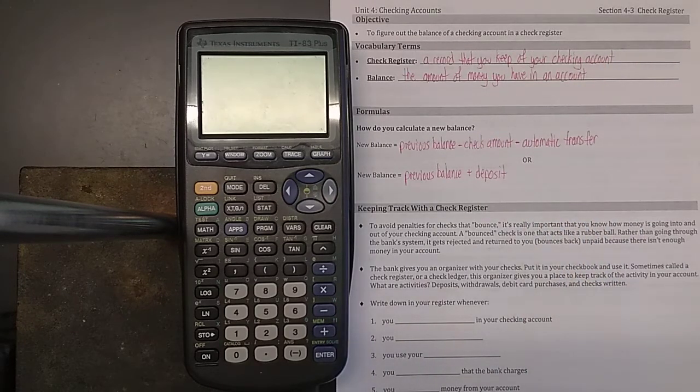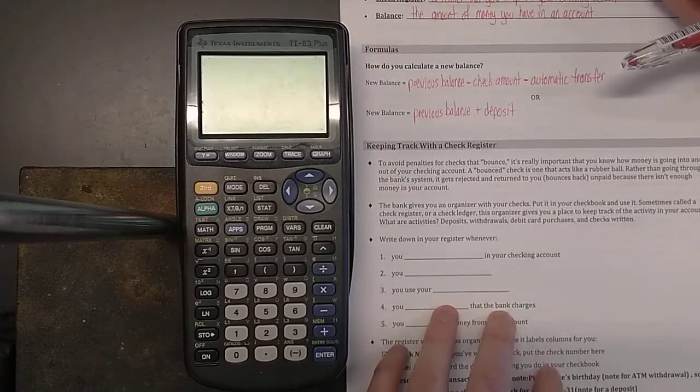So it's pretty obvious. If you're gaining money, you add it to your previous balance. If you're losing money, you subtract it from your previous balance. That's it. Now, a little bit more about check registers before we get to practicing with them.